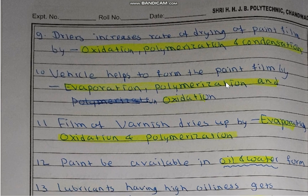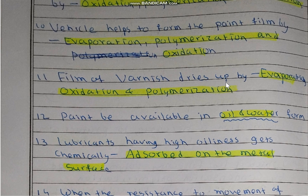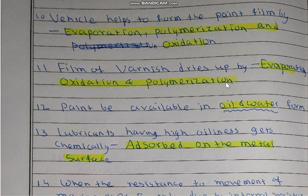Dryers increase the rate of drying of the paint film by oxidation, polymerization, and condensation — these three processes take place during drying of the paint film. The vehicle helps to form the paint film by evaporation, polymerization, and oxidation.